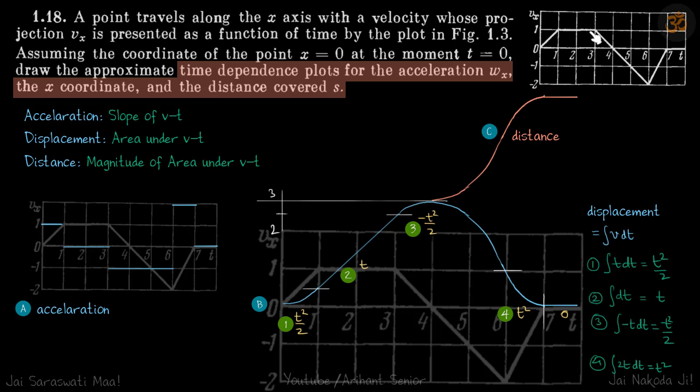In the third part, the velocity is decreasing and proportional to minus t. Here v is proportional to t, here it's proportional to minus t. So we can write v as minus t, giving minus t squared by 2. It will be a parabola again and start to come down.